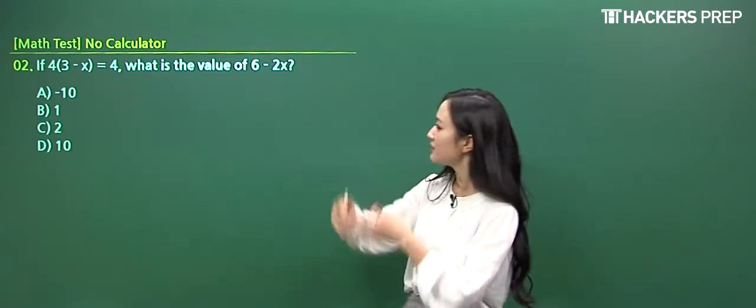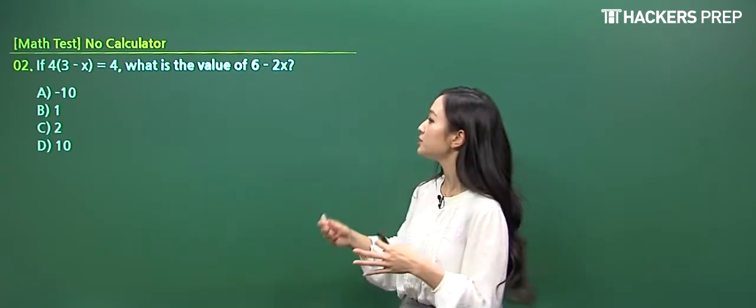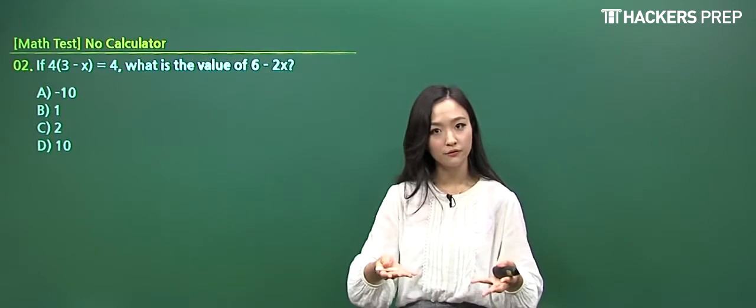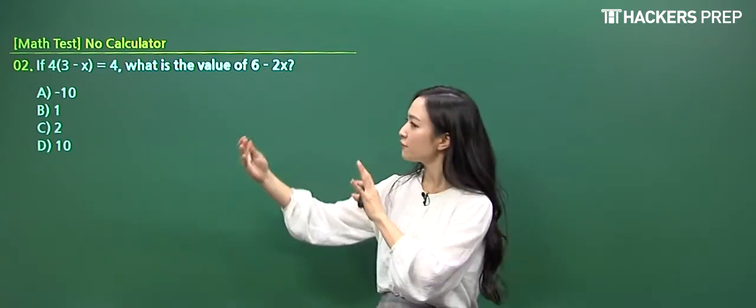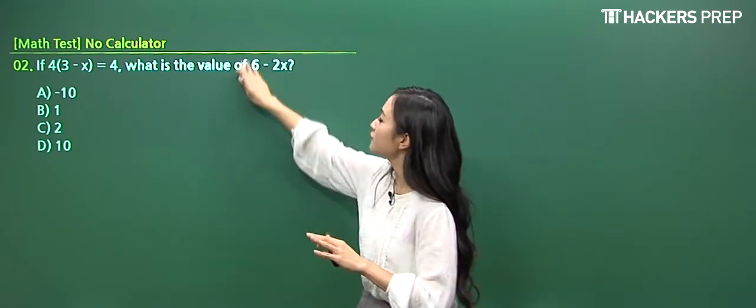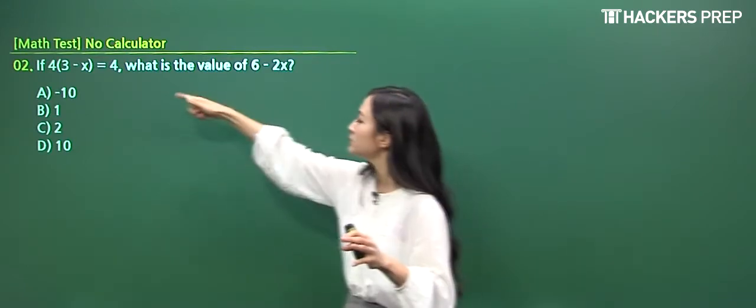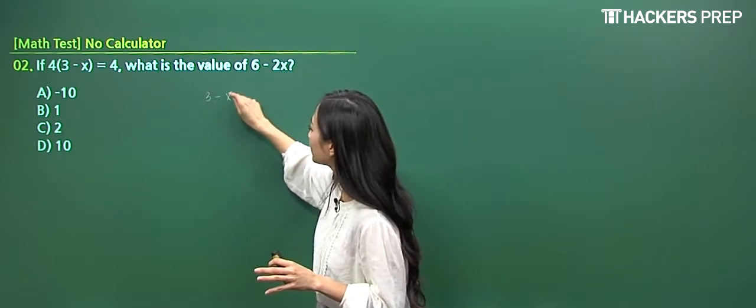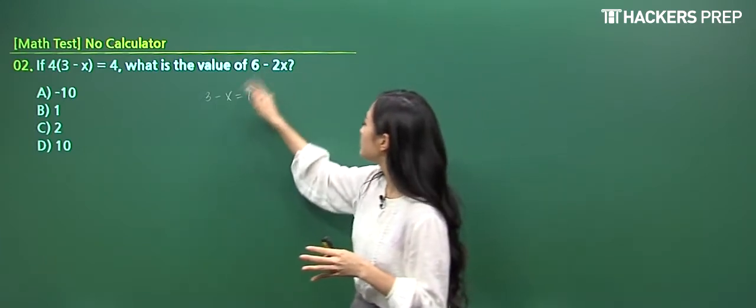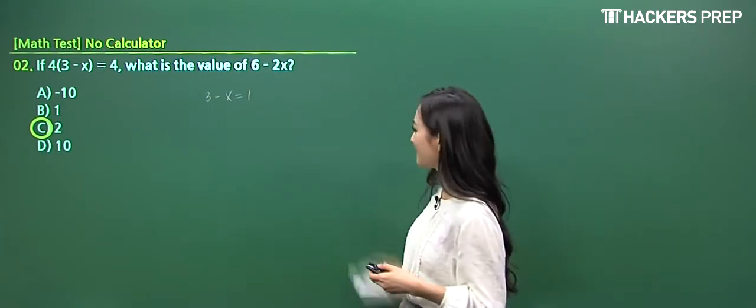So another expression given as the equation and they're asking for a final value of 6 minus 2x. Notice how we're doing a no calculator section, so it can't be that difficult. So what is the first step that you guys thought of when we look at the original equation? So we have a 4 multiplied to the entire expression and I think that the final expression we're interested in is simply the double of whatever goes in the parenthesis. So why don't I just divide both sides by 4 and I simplify the given expression as 3 minus x is equal to 1 and double that equation is double the constant value, so you don't even need to do anything. So you circle C and we're done.